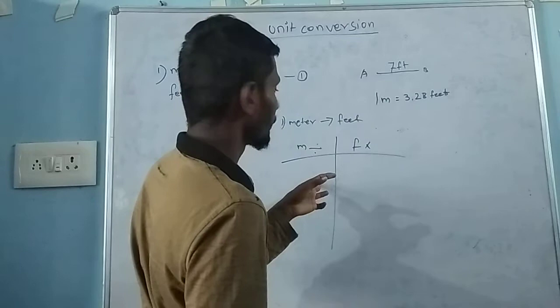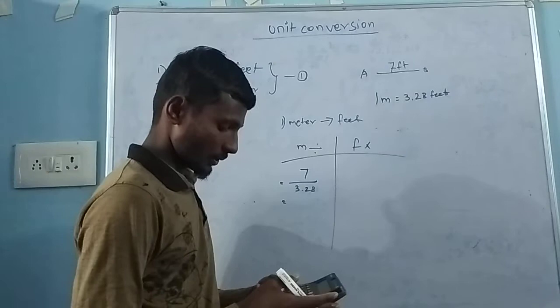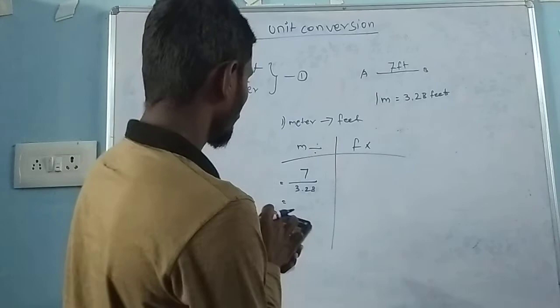7 divided by 3.28. If you divide it, you will get 2.13.